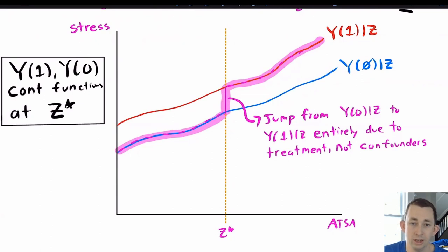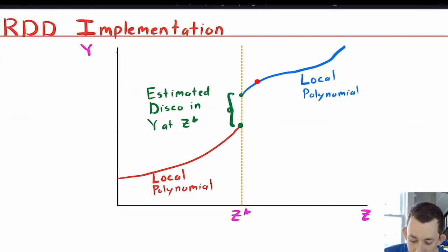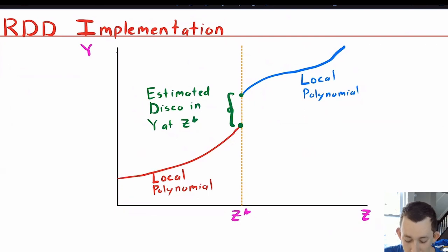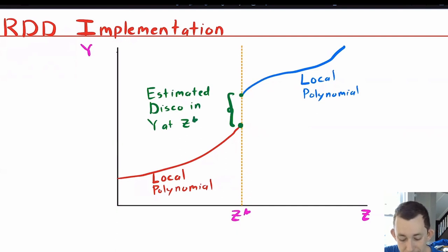To implement an RDD in practice, you use a local polynomial fit on either side of the threshold. Estimate a local polynomial fit with a confidence interval to the right of Z-star and a separate one to the left. Use those fits to estimate the expected value of Y as you approach Z-star from the left and from the right. Then take the discontinuity in Y at Z-star, estimate the compliance rate as in an IV estimate, and take the ratio of those two things — that gives you your RD estimate.